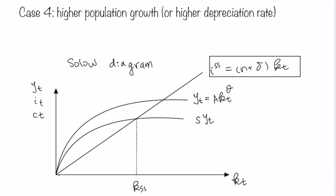Let's go through the steps to think about how to plot the transition path for output, consumption, investment, and capital stock under this case. When there is higher population growth or higher depreciation rate, will it affect the steady state? The answer is yes, because changes in population growth rate and higher depreciation rate affect the slope of the steady state condition. Given that the slope becomes higher, under the Solow diagram we will have a new steady state condition, and the new capital stock in the steady state will be lower.